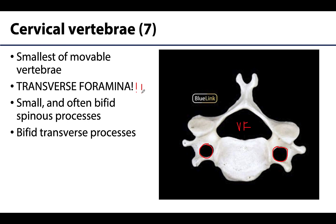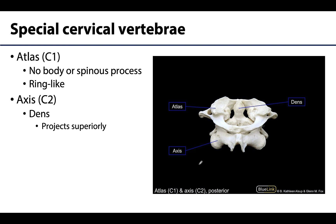It's through these transverse foramina that the vertebral artery ascends from the root of the neck to make its way to the brain — the vertebral artery is one of the two dominant arterial sources for the brain. Other things unique to the cervical vertebrae: some processes are bifid, meaning split into two separate projections — you can see that for the spinous process and also for the transverse process, though not all cervical vertebrae are bifid and there is considerable variation. C1, the atlas, articulates with both the occipital bone of the cranium and C2, is almost completely ring-like, and lacks a body as well as a spinous process. It still has a transverse foramen, so you know it's cervical.